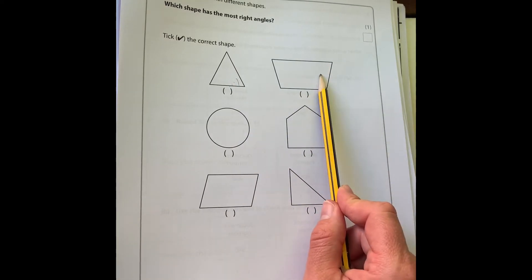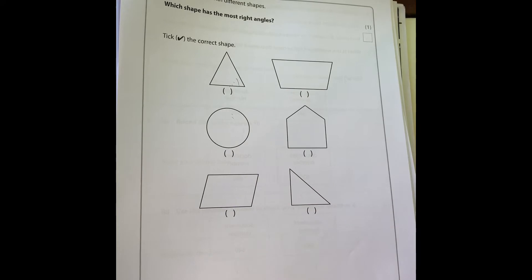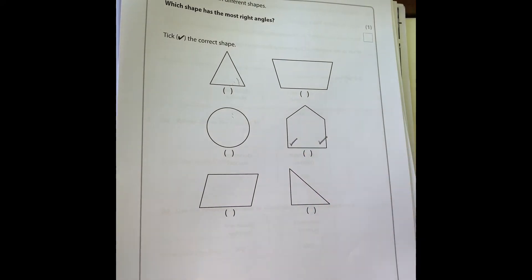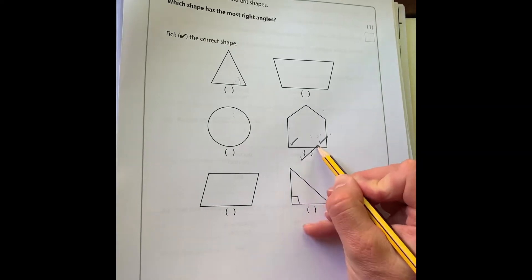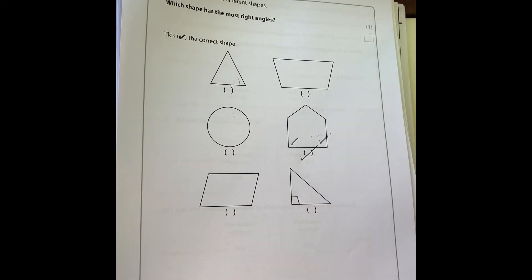We've got a triangle which has no right angles, nor does this trapezium. The circle certainly hasn't got any angles. This one has two right angles. This parallelogram has no right angles and this triangle has one. So the shape with the most right angles is this one here, which is a pentagon because it has five sides.